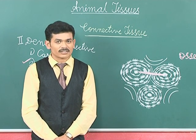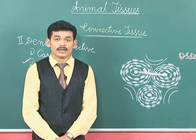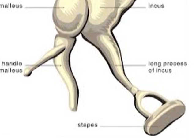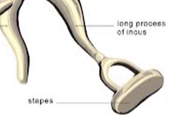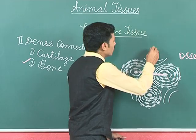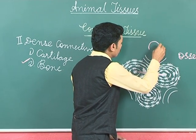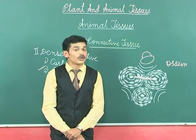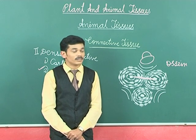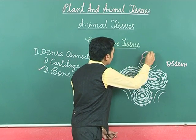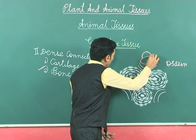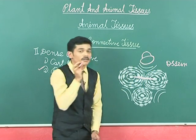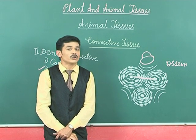An interesting fact: which is the smallest bone in the body? It is the stapes. The smallest bone is the stapes, which is present in the ear. It is called stapes because it looks like a foot plate. It is also called the ear ossicle.